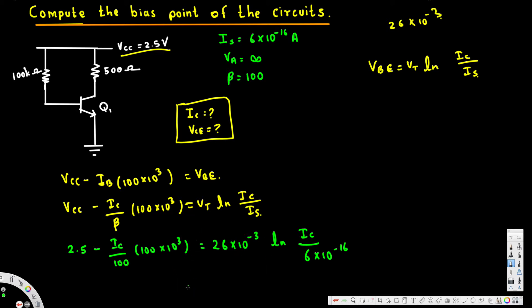Now if we rearrange and solve for Ic, finally we will get Ic is equal to 1.754 milliampere. Now we have Ic.